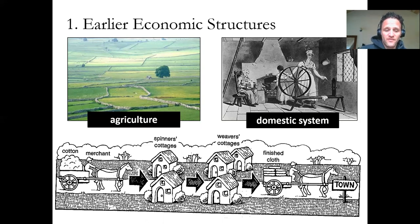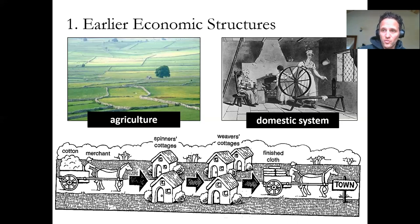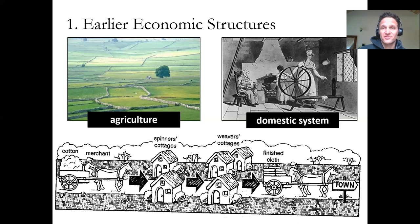The other big change with the factory system is that labor no longer revolved around the rising and setting of the sun or the seasons. Factories worked 24 hours a day, seven days a week, through the winter and the summer — transforming how people work and the time of day that they work. Especially once you get electricity, you can have lights to provide light in a factory all day, all night. Days become more organized mathematically.